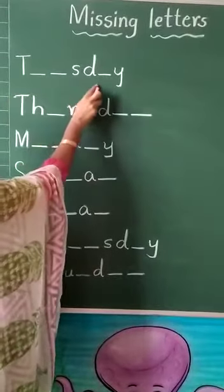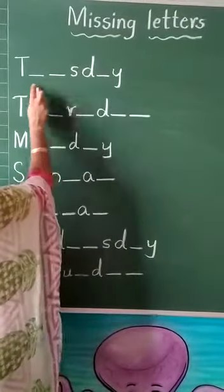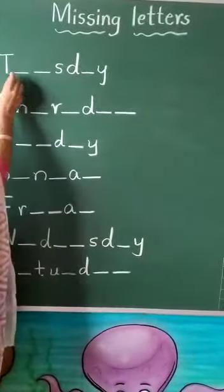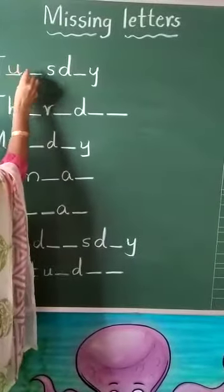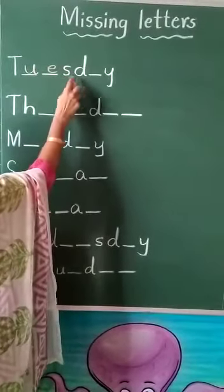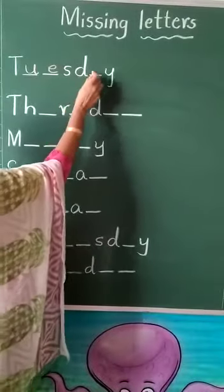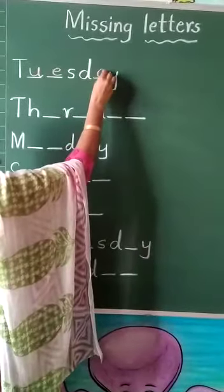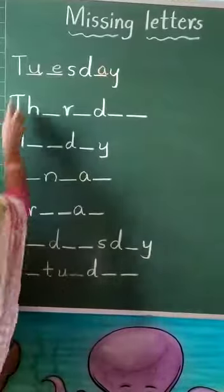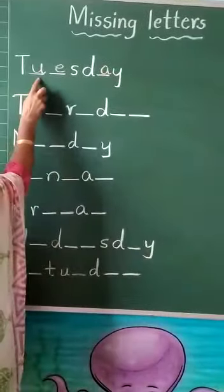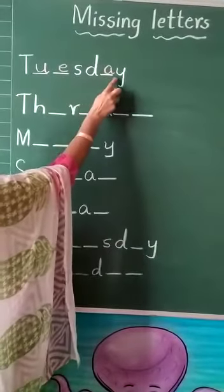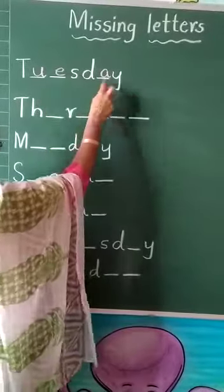Here we have given the spellings of Tuesday. What is the Tuesday spelling? T-U-E-S is given, D is given — here we should write A. T-U-E-S-D-A-Y: Tuesday.